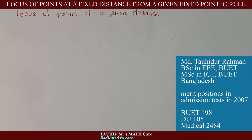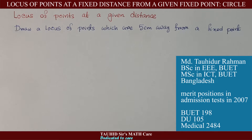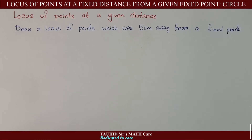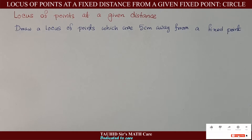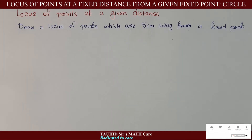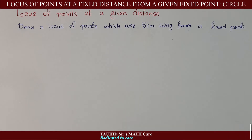Now we will learn how to draw the locus of points at a given distance. For example, let's say you are asked to draw a locus of points which are five centimeters away from a fixed point. The key thing to keep in mind is that the locus of points at a given distance from a fixed point is a circle with that point as center.